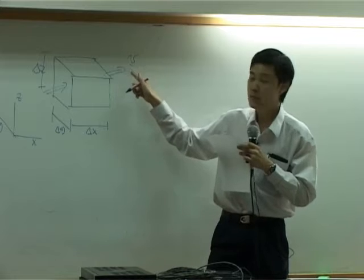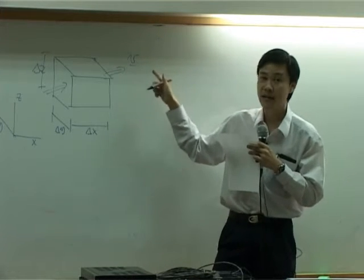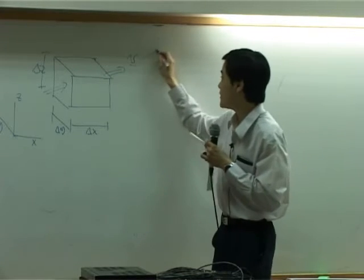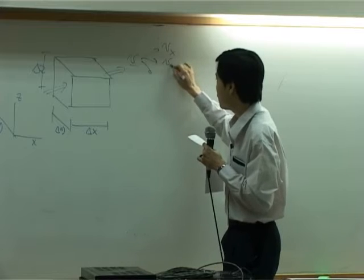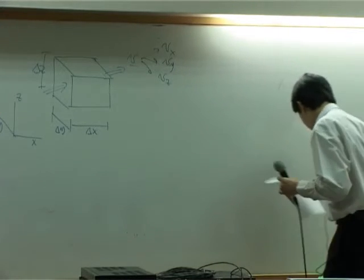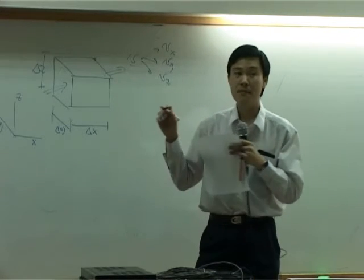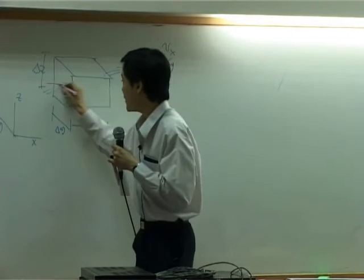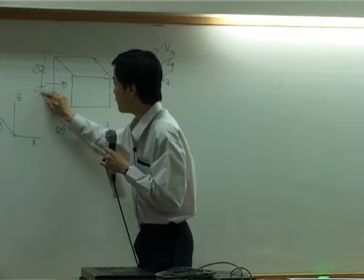The fluid goes out of the cube with velocity v. This velocity can be in any direction, and it can be taken to be vx, vy, and vz. So if I look at the mass going into the shell in the x direction, there will be vx.